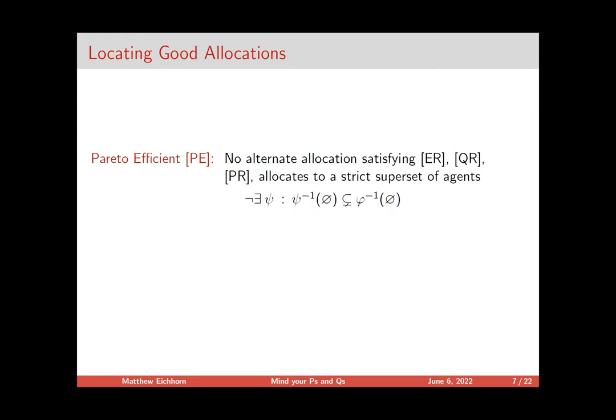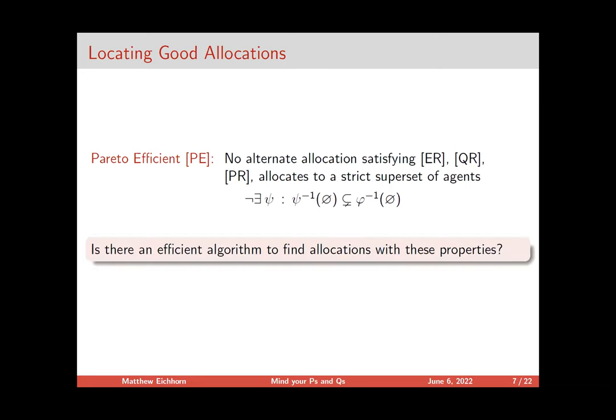We need one more objective: a familiar notion of Pareto efficiency. Specifically, I want to be Pareto efficient in how many allocations I'm making. I never want there to be an alternate allocation that meets the previous rules but can somehow allocate to a strict superset of agents — there's never a way to swap people around to fit another person in. The big question is: are there efficient algorithms to find allocations with all four of these properties?